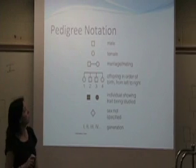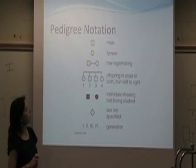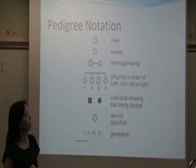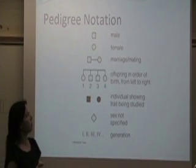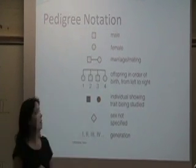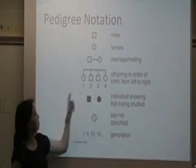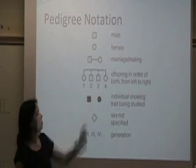This is the standard notation of a pedigree. If it is a male, it's indicated by a square. A female is indicated by a circle. If the male and female are married, there is a line between them. And then this would indicate offspring of those individuals, so they have two girls and two boys.